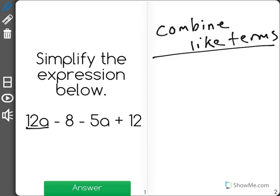So for example, we have 12a and negative 5a. When we combine those, it's like saying 12a minus 5a.